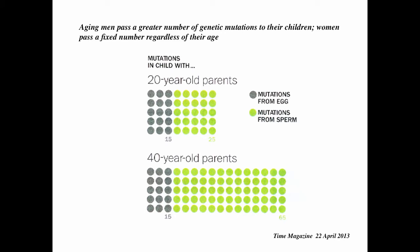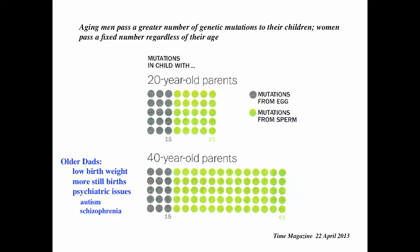Aging men pass greater numbers of genetic mutations to their children, while women tend to pass a fixed number regardless of age. Data published in Time magazine show that the number of mutations accumulating in sperm increases with age, whereas mutations in eggs stay relatively the same. This is likely because meiosis occurs in men throughout reproductive life, increasing chances of errors in the replication or DNA repair machinery. Children from older men may have relatively lower birth weight, more stillbirths, and more psychiatric issues, especially autism or schizophrenia.